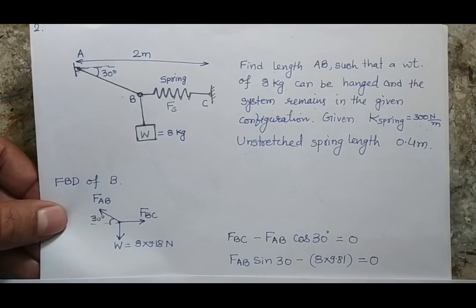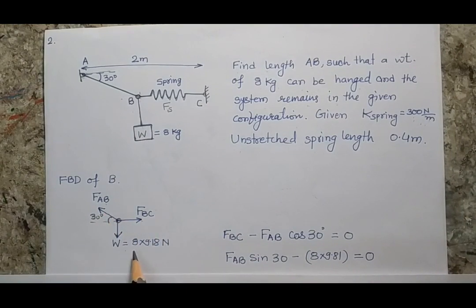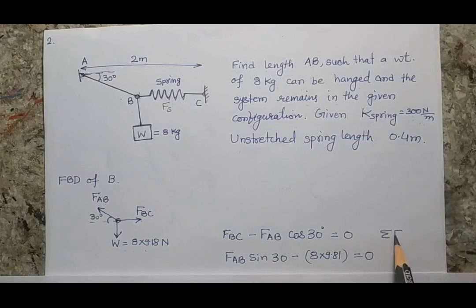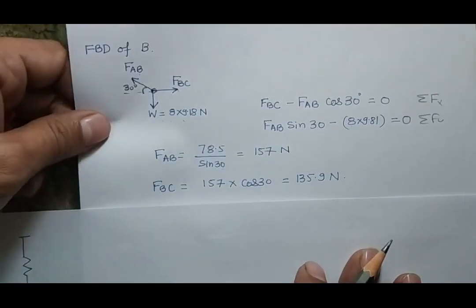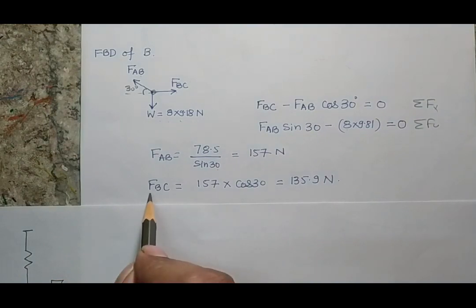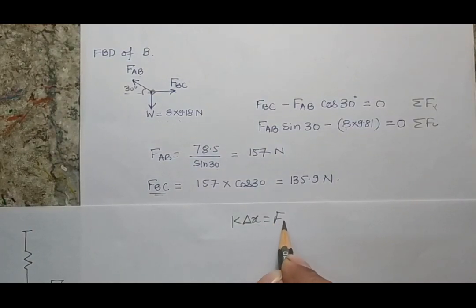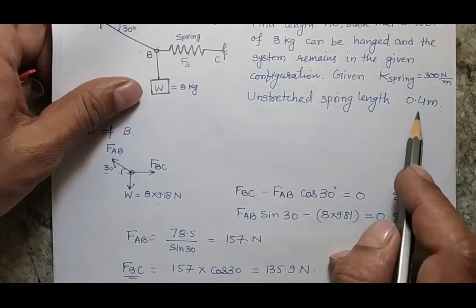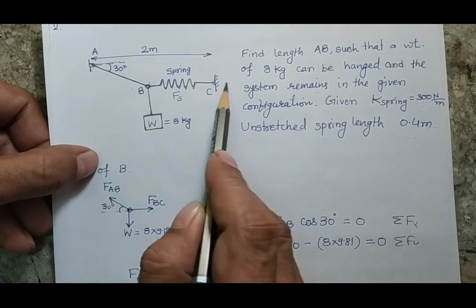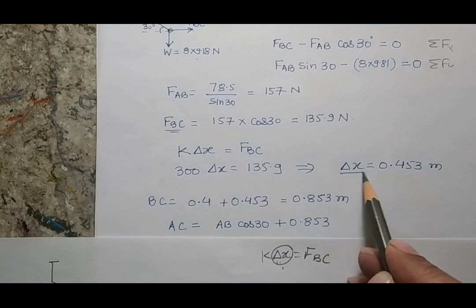At point B, the forces are: spring force F_BC, force F_AB, and weight W. Since W is known, we can write two equilibrium equations — one for horizontal forces and one for vertical forces. Solving these gives F_BC and F_AB. Now, since the spring is stretched in the current state, using the formula F = k·Δx, we calculate the extension in the spring as Δx = 0.453 meters.